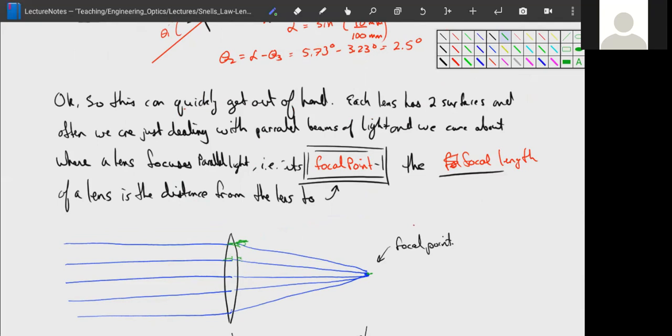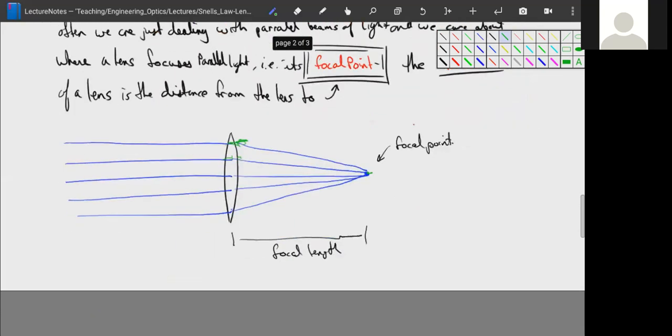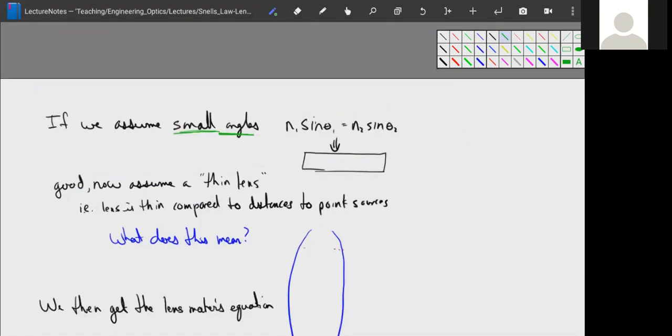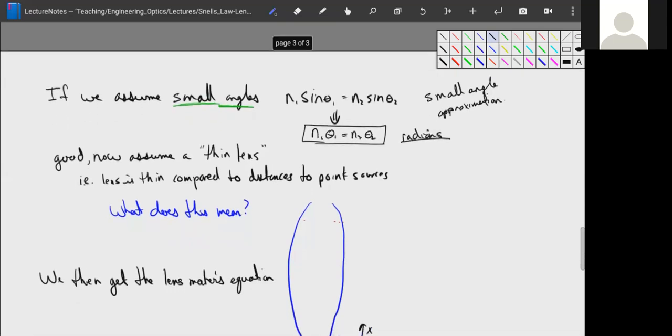If we assume small angles at the interface here, remember how we talked about when light hits a surface, we have theta one and theta two. As long as theta one and theta two everywhere is small, then n₁sinθ₁ = n₂sinθ₂ can be approximated by n₁θ₁ = n₂θ₂. This is in radians. This is basically the small angle approximation. It works better the smaller theta is. As soon as theta gets within a few degrees, the errors start to really add up.